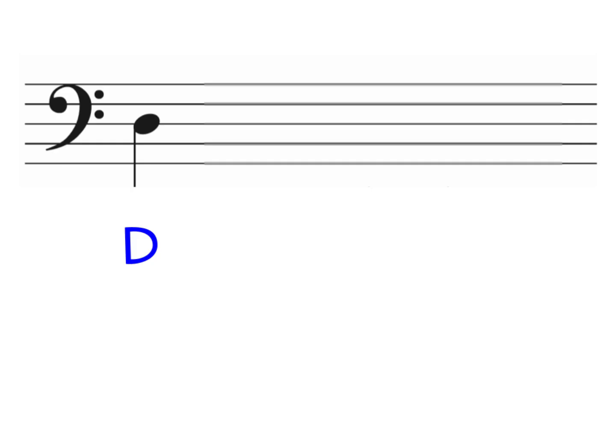For our open D string, the note head is placed on the middle line of the music staff. For A, like the open A string on the cello, the note head is placed on the top line. Can you test yourself to see how quickly you can identify these Ds and As that will show up on the screen?